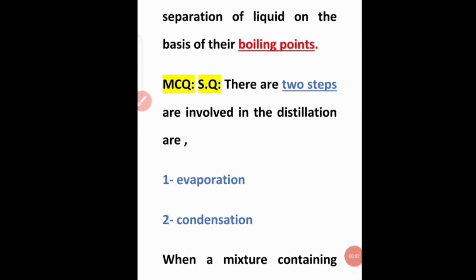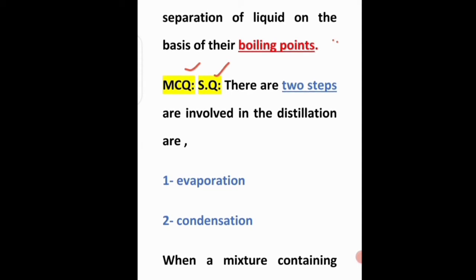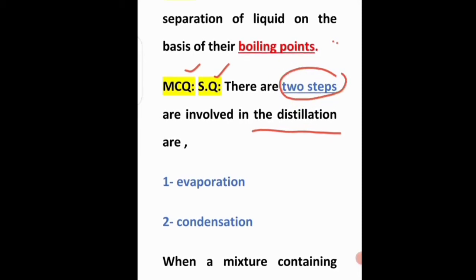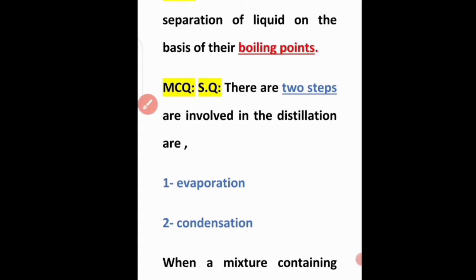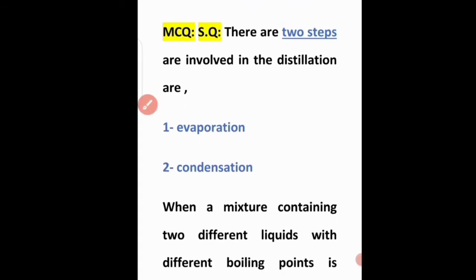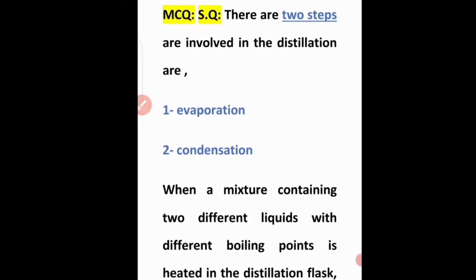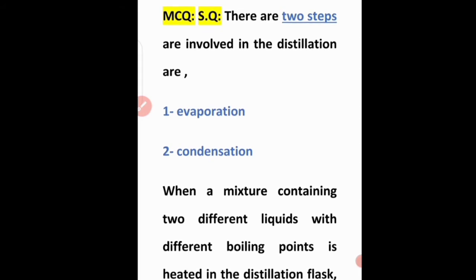Next, an important MCQ and short question: how many steps are involved in distillation? There are two steps involved in distillation: evaporation and condensation. For MCQs, remember these two steps. Evaporation occurs by applying more heat and low pressure; condensation is achieved by applying more pressure.